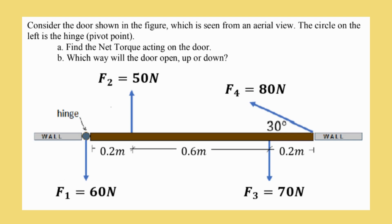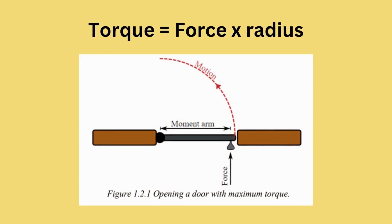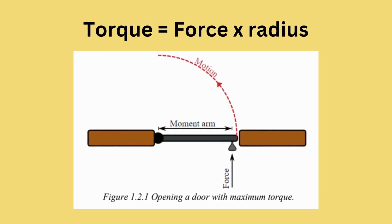Let us try to solve this problem. Consider the door shown in the figure, which is seen from an aerial view. The circle on the left is the hinge. A. Find the net torque acting on the door. And B. Figure which way the door will open, is it up or down. To answer these questions, let us first recall the equation: torque equals the product of force and radius.